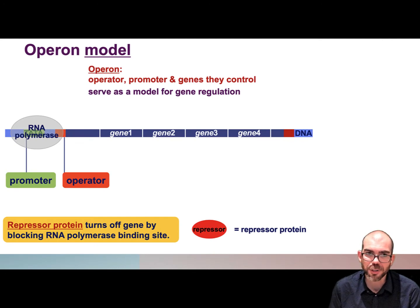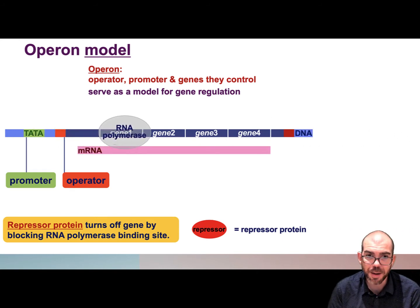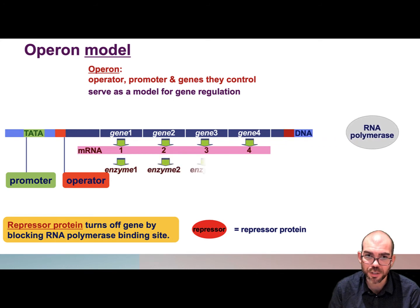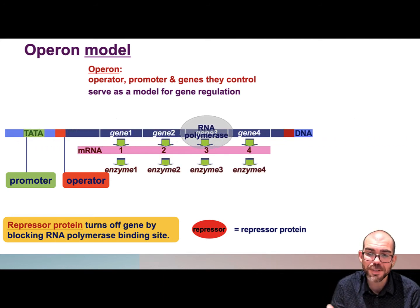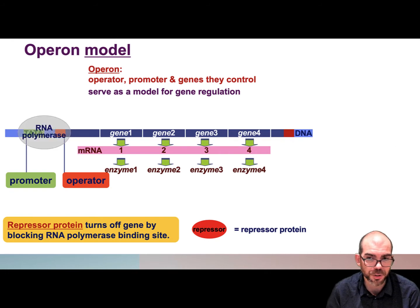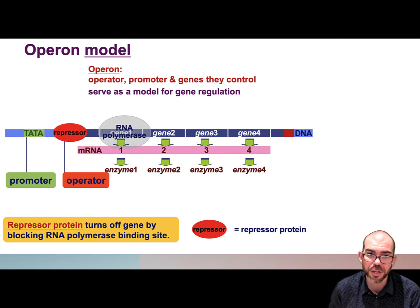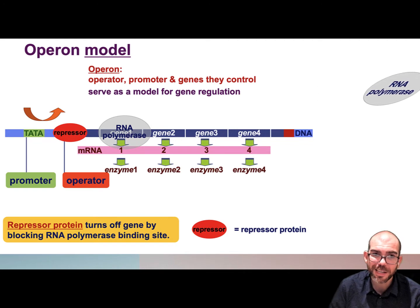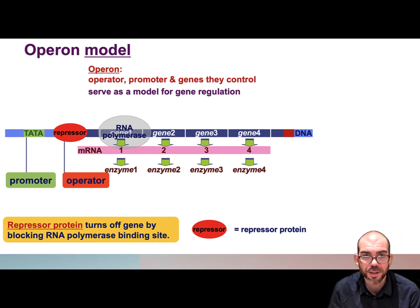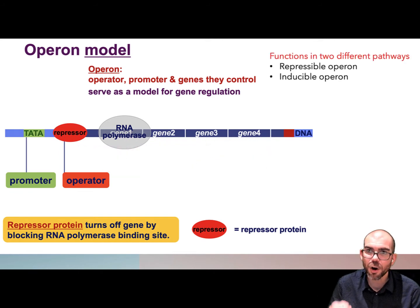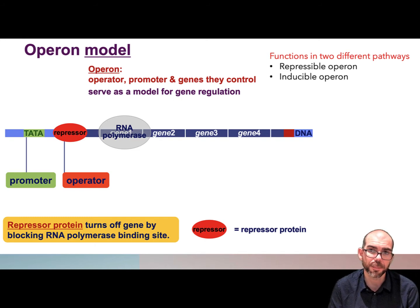Here you can see that model in action. RNA polymerase, when everything's going well, will read the genes. It will then produce mRNA. That mRNA is going to contain the code for each gene, which can then be translated to produce the enzymes in our metabolic pathway. This is the gene being turned on. To turn the gene off, a repressor binds to the operator. Once that repressor is bound, RNA polymerase now can't go any further than the promoter. It will attach to the TATA box and then bounce right off, so none of the mRNA is made, none of the enzymes in the pathway are made. There are two different pathways for genes to be turned on or off based on this operon model: one's called the repressible operon, and the other is called the inducible.